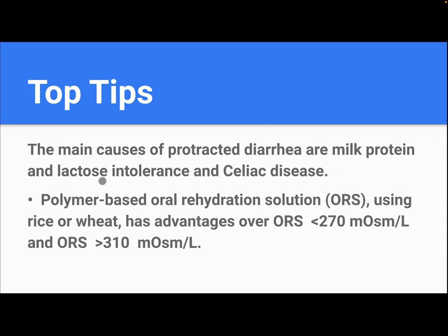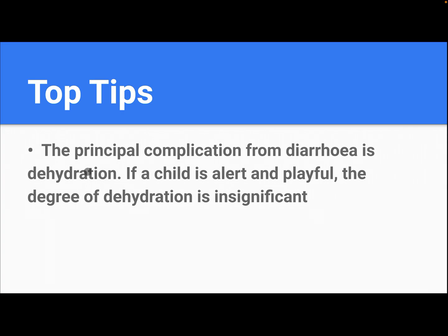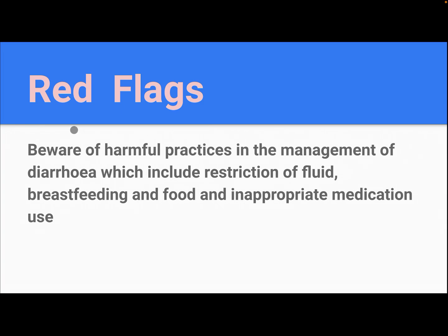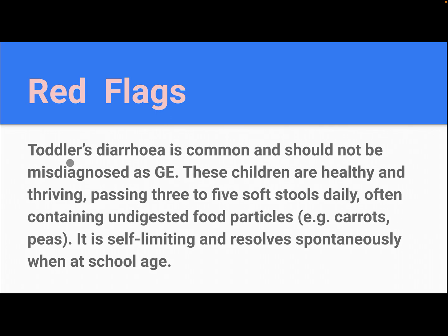The main causes of protracted diarrhea are milk protein and lactose intolerance and celiac disease. Polymer-based oral rehydration solution using rice or wheat has advantages over ORS less than 270 mOsm/L and ORS more than 310 mOsm/L. The principal complication from diarrhea is dehydration. If a child is alert and playful, the degree of dehydration is insignificant. Red flags: be aware of harmful practices in management, including restriction of fluids, breastfeeding, and food, as well as inappropriate medication use.